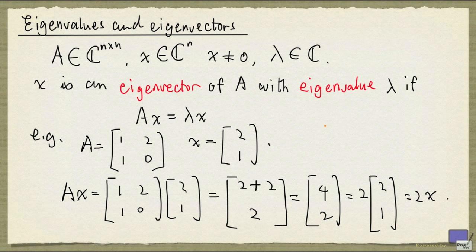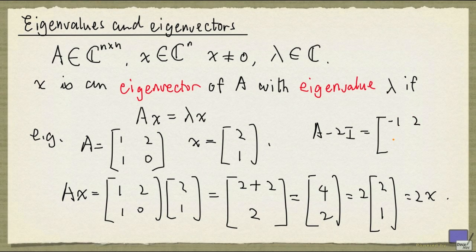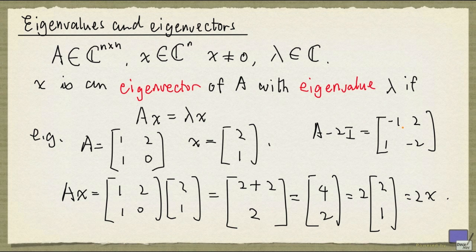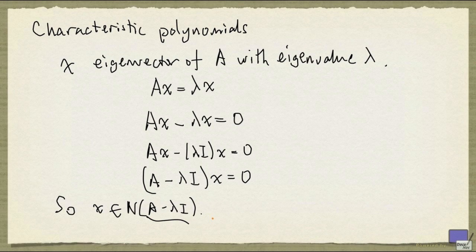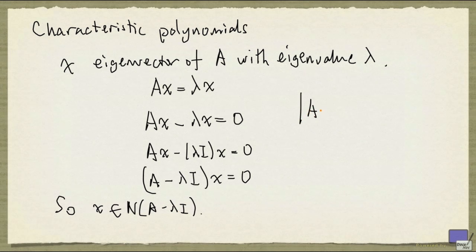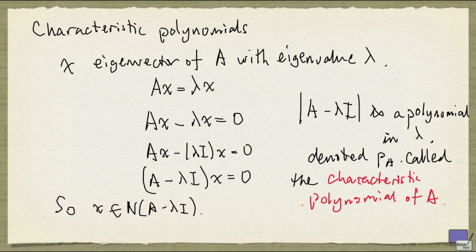In this example here, if you look at A minus 2I, the matrix is [[-1,2],[1,-2]]. And the null space contains the vector [2,1]. So again, x is in the null space of A minus lambda I. But that means that this matrix A minus lambda I is singular. So its determinant is going to be 0. And the determinant of A minus lambda I is a polynomial in lambda. And this polynomial is denoted by p subscript A, called the characteristic polynomial of A.